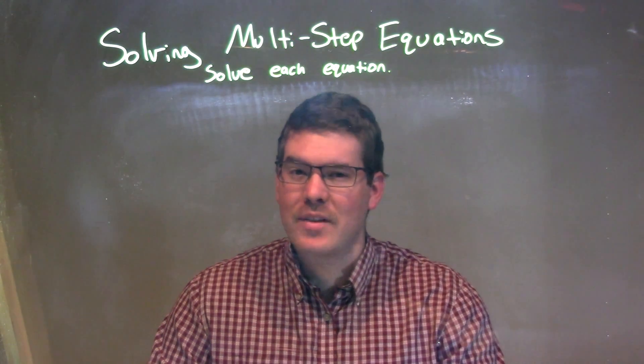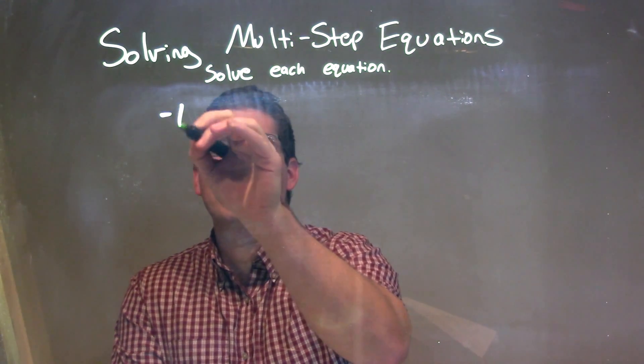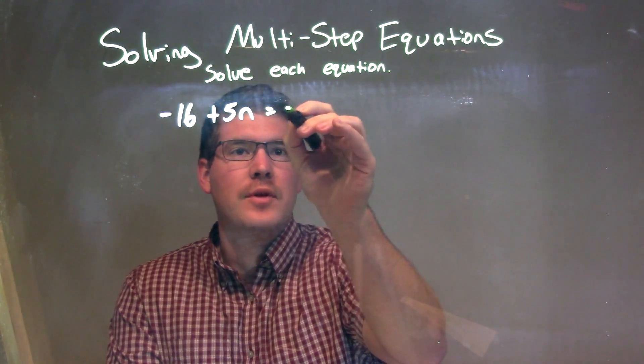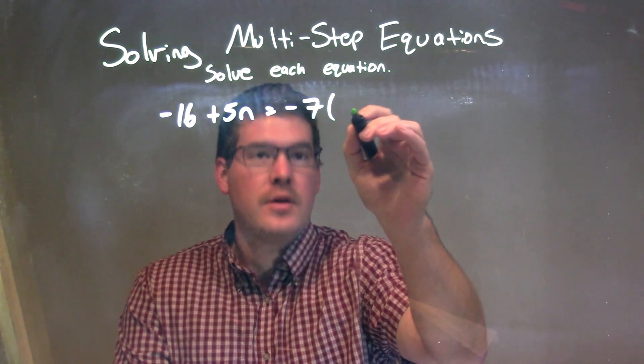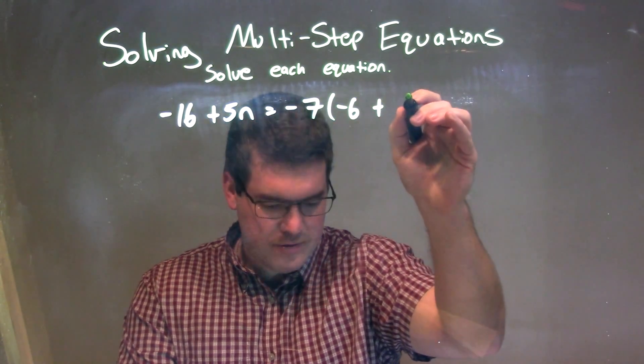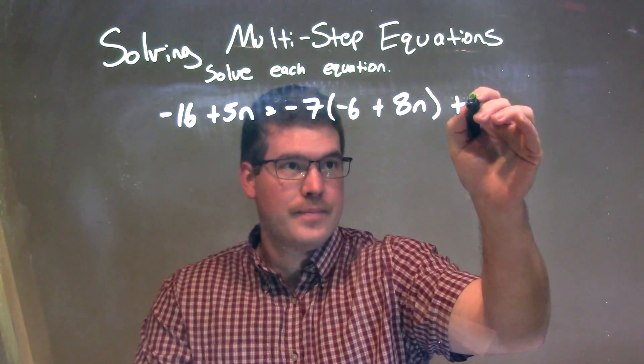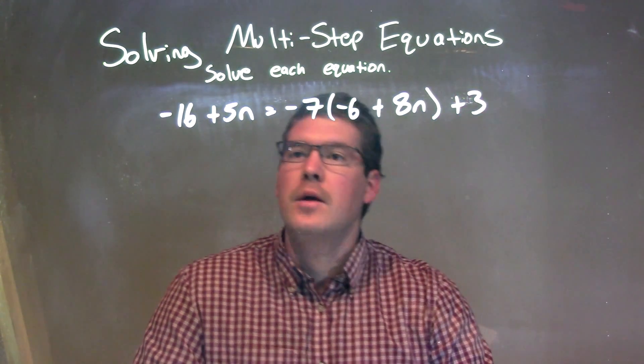If I was given this equation: negative 16 plus 5n is equal to negative 7 times (negative 6 plus 8n) plus 3.